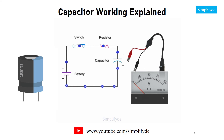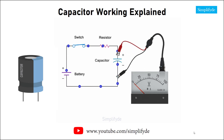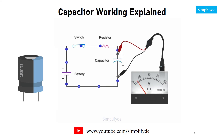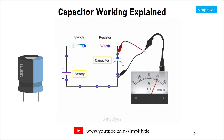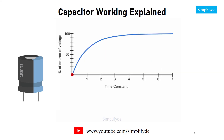Eventually the voltage across the capacitor will equal the voltage of the source. At this point the flow of electrons stops because the source voltage and capacitor voltage are equal but opposing each other — the capacitor is essentially charged.